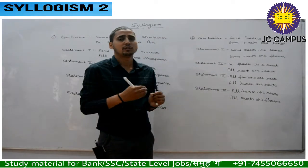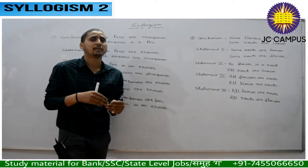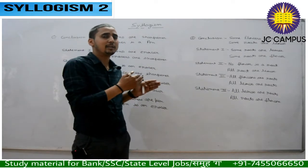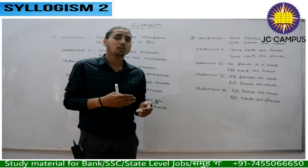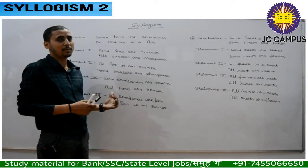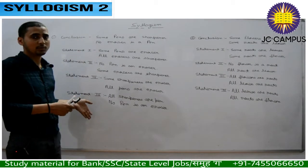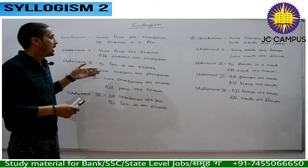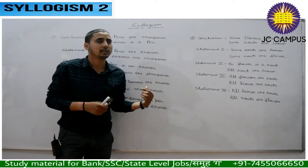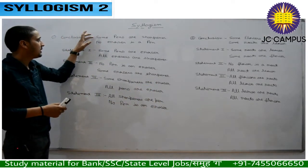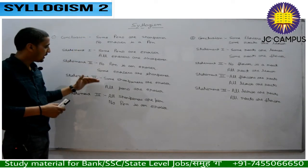I have told you the 4 types of statements. In some questions, the conclusion is given first, then the statements are given. SBI PO type questions are given. The conclusion is given — as you can see, there are two conclusions — and the statements are given.